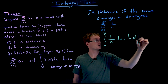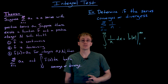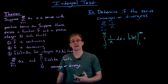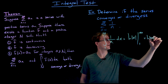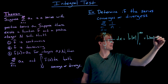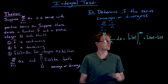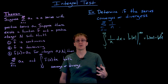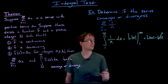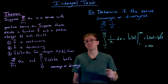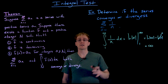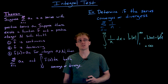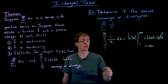We evaluate the antiderivative at the upper and lower limits: the natural log of infinity minus the natural log of 1. The natural log of 1 is zero, but the natural log of a quantity approaching infinity also approaches infinity — it diverges. So the improper integral diverges, which means the harmonic series must also diverge.